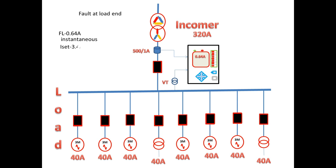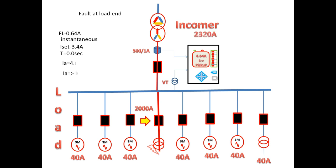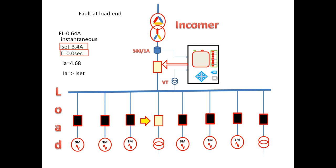So I am going to check now with instantaneous over current. For this I am going to keep ISET equal to 3.4A and trip time is 0 seconds. Now we consider a suddenly heavy fault occurring on one of the outgoing feeder transformers. Due to this fault the fault current taken is 2000A. The actual current of 4.68A flows on the secondary side of the CT, which is greater than ISET.